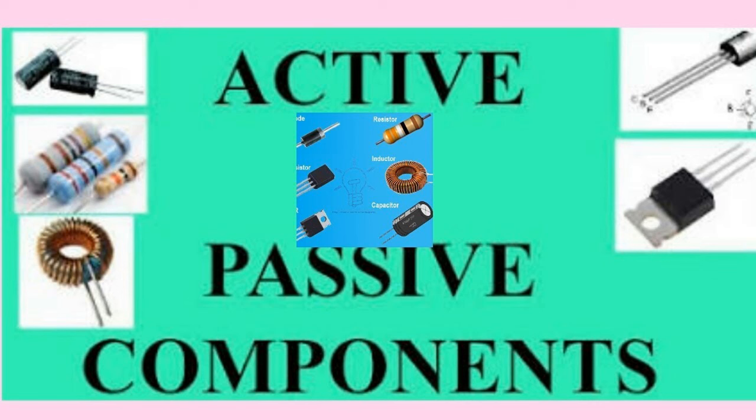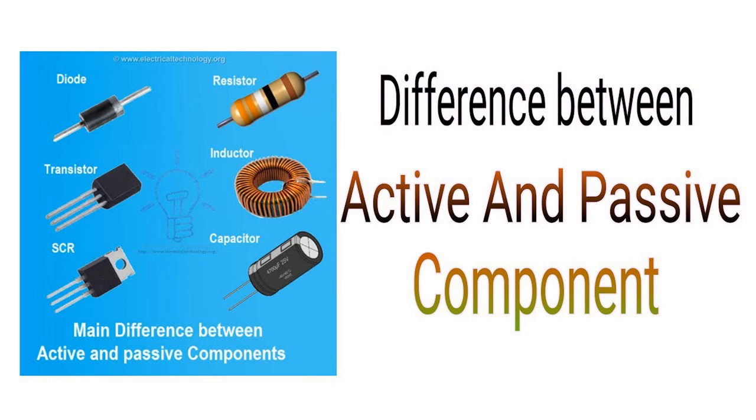Operational amplifiers (op-amps) are high-gain voltage amplifiers with two inputs — inverting and non-inverting — and an output. They are widely used for various signal processing tasks, such as amplification, filtering, and mathematical operations. The symbol for an op-amp typically has two input terminals, one output terminal, and power supply connections.